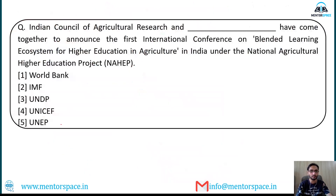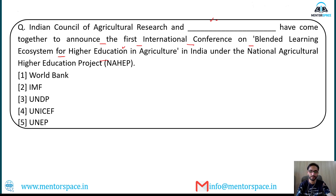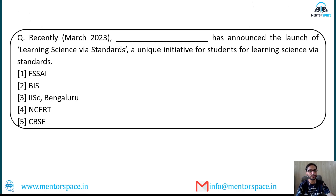This covers all the important news from the second week of March. Now let us cover some important MCQs related to this news. Question 1: ICAR and which of the following institutions have come together to announce the first international conference on blended learning ecosystem for higher education in agriculture? Options: World Bank, IMF, UNDP, UNICEF, UNEP. The answer is World Bank.